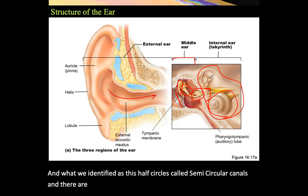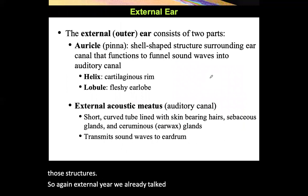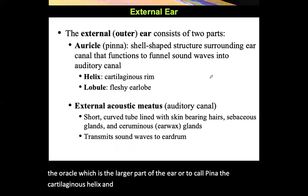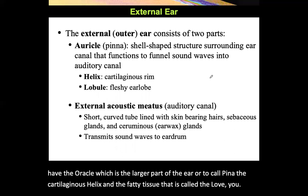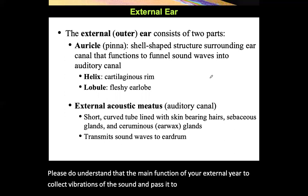To review, the external ear includes the auricle, also called the pinna, the cartilaginous helix, and the fatty tissue lobule. The main function of the external ear is to collect vibrations of sound and pass them to the next part, the middle ear.